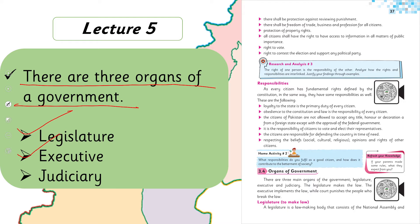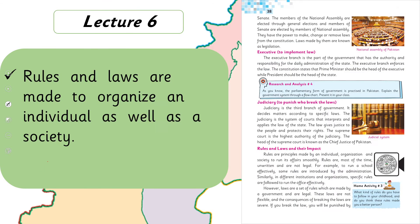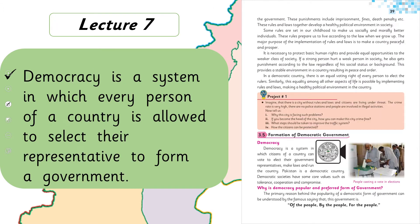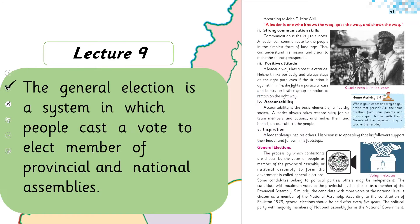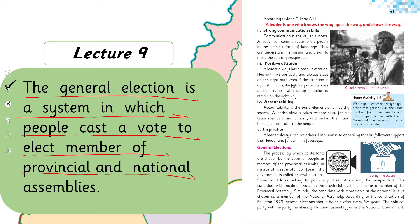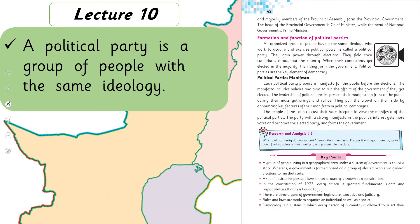In lecture number five, we discussed that there are three organs of the government: legislature, executive, and judiciary. In lecture number six, we discussed that rules and laws are made to organize an individual as well as a society. In lecture number eight, we discussed that a leader is a person who has a vision and influences people towards a specific goal. In lecture number nine, we discussed that the general election is a system in which people cast a vote to elect members of provincial and national assemblies.